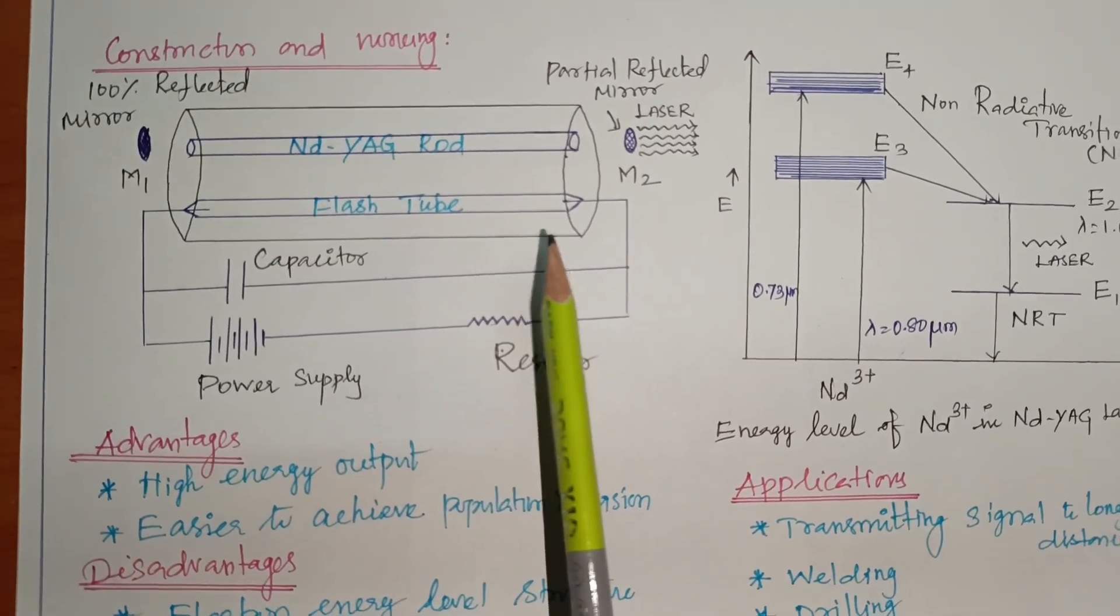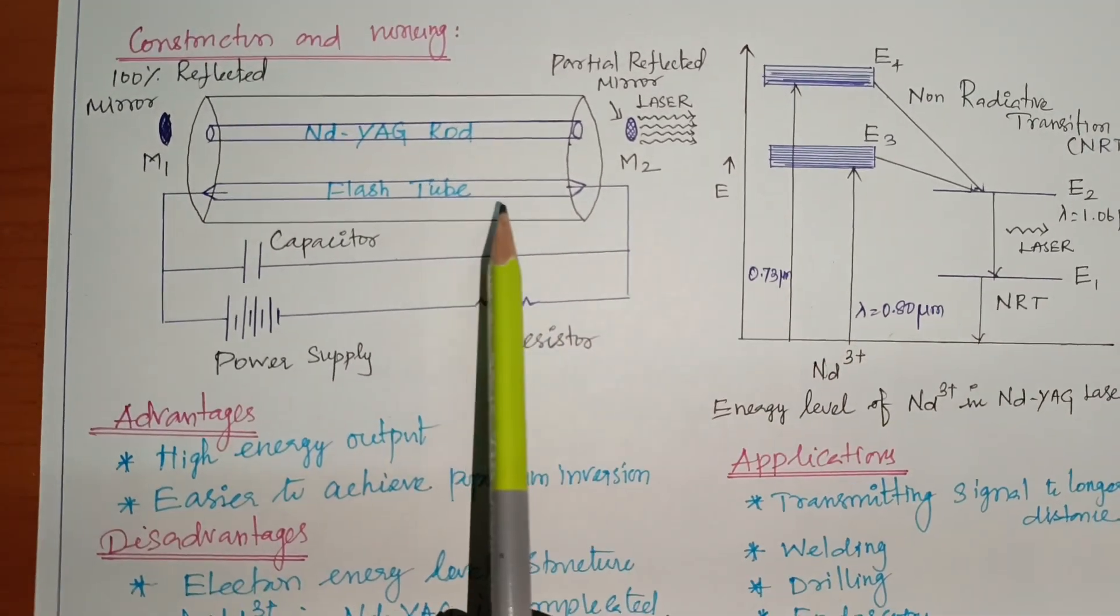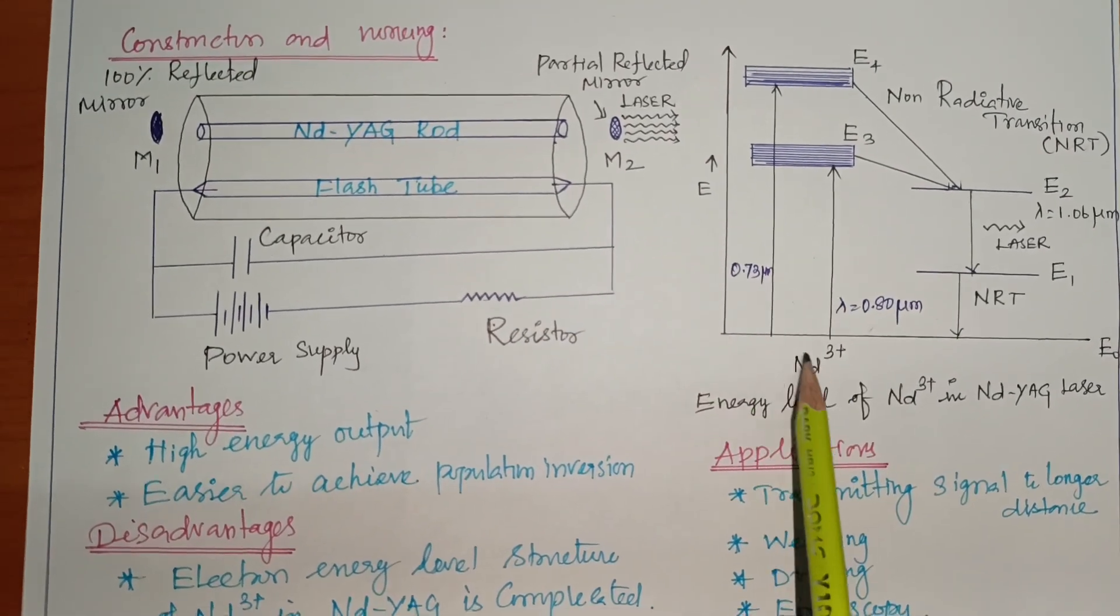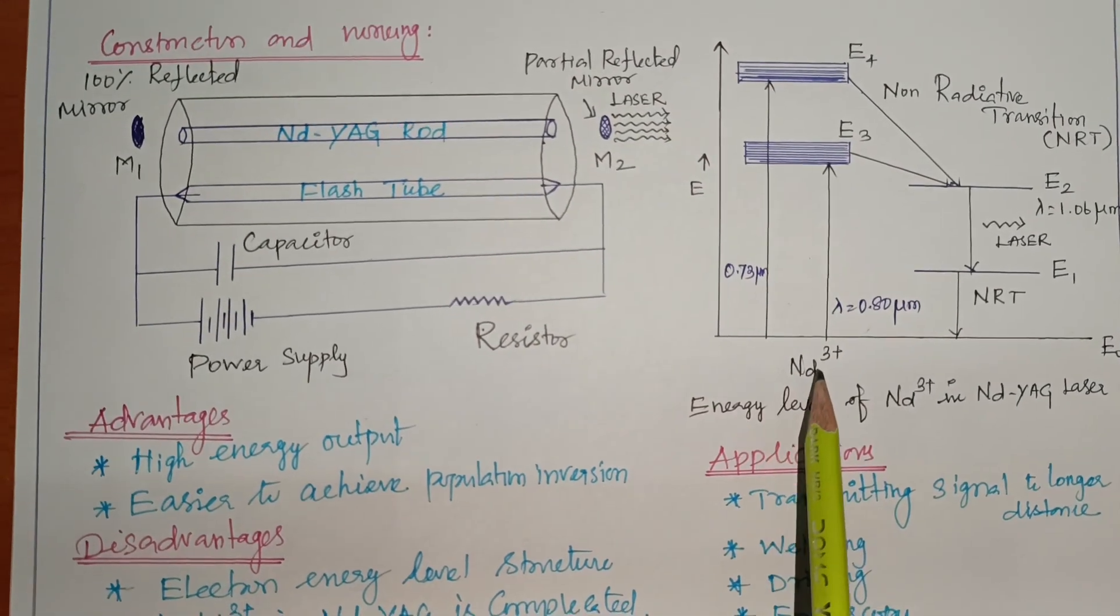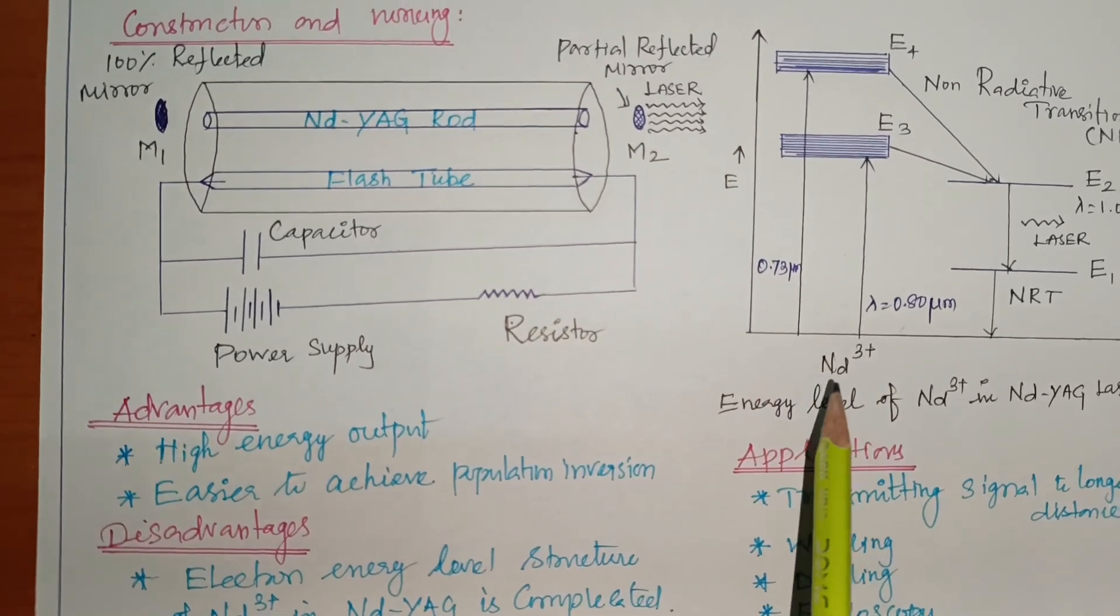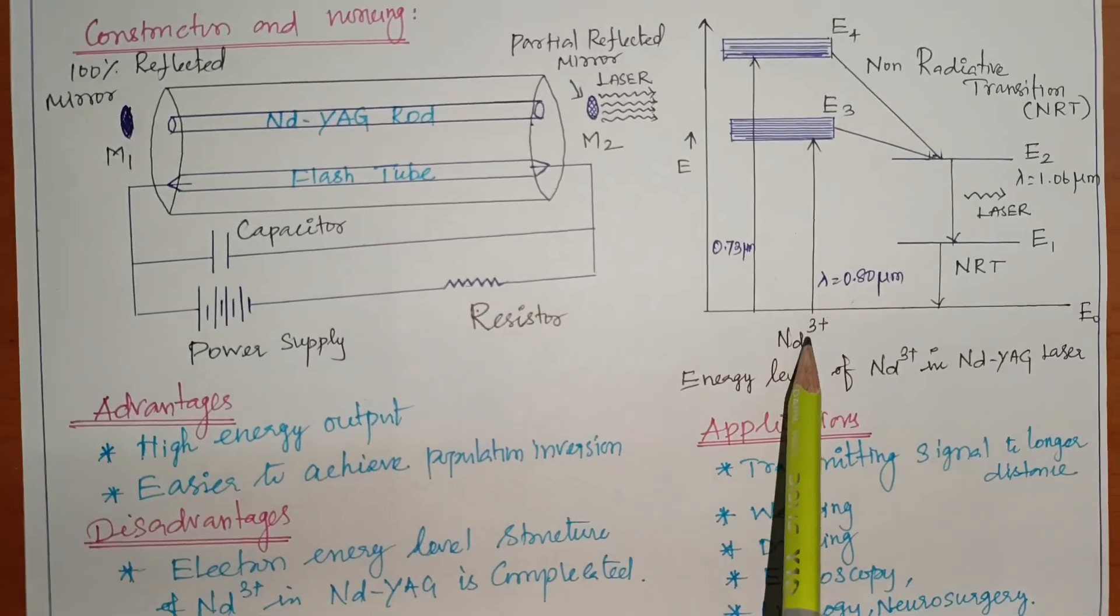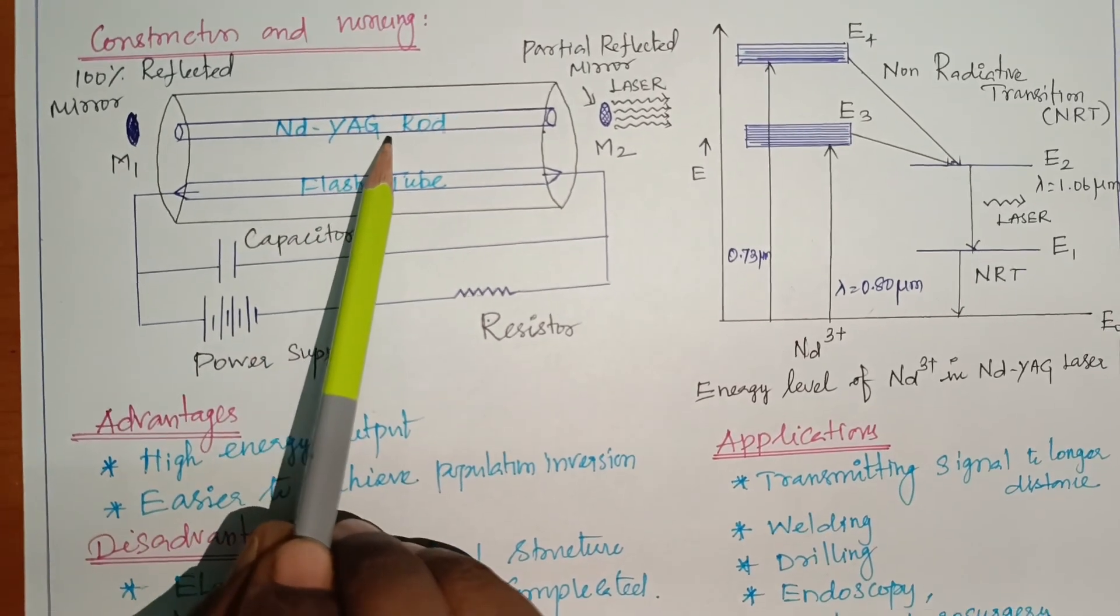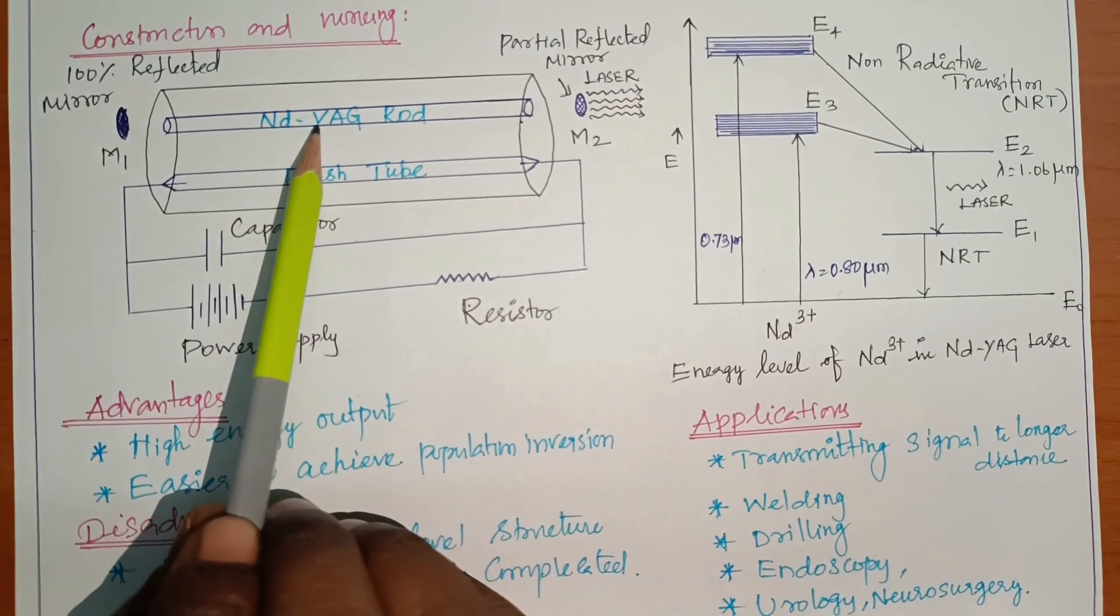Then working. So working. When flash lamp is on. Neodymium ions. A small amount of yttrium ions replaced by neodymium ions. So in the rod. In the rod neodymium, yttrium, aluminum. In the rod.